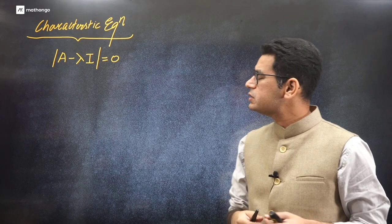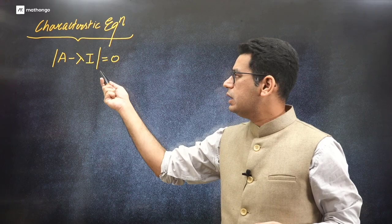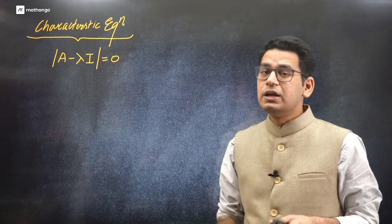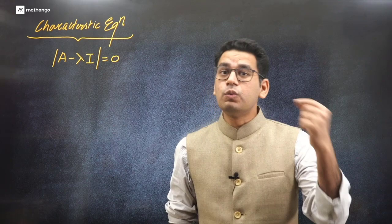So A minus lambda I, where I is the identity matrix, solve the determinant equal to zero. This will give you an equation in terms of the parameter lambda. So the equation that forms in lambda terms will be an equation, not a matrix anymore, it will be an equation.